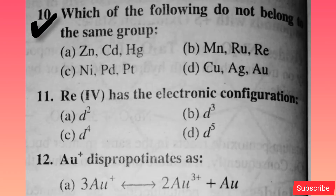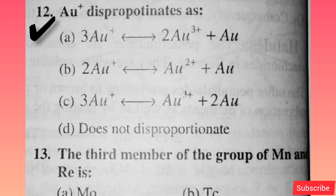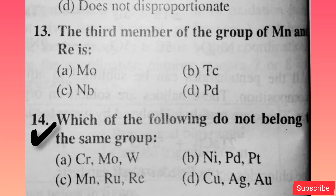Which of the following do not belong to the same group? Option B is right. RE4 has the electronic configuration — option B is right. AU positive disproportionates as — option C is correct. The third member of the group of Mn and Re is — option B is right. Which of the following do not belong to the same group? Option C is right.